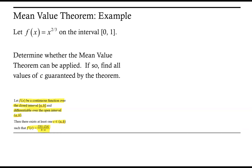So let's go ahead and find f prime of x. f prime of x is going to be 2 thirds times x to the 2 thirds minus 1. Since 2 thirds minus 1 is negative 1 third, this is equal to 2 over 3 times the cube root of x.